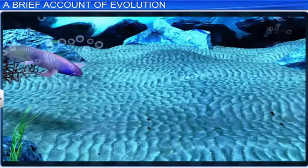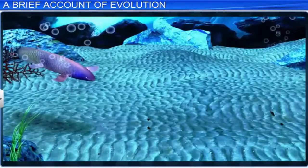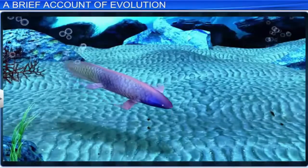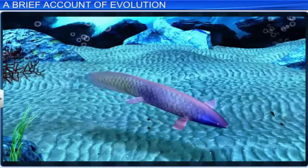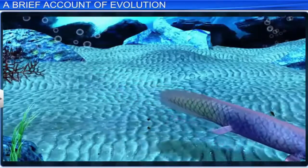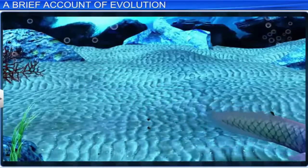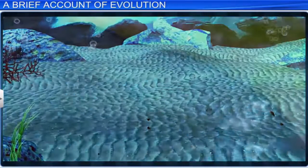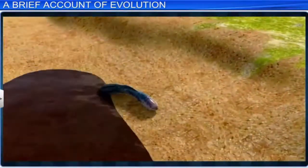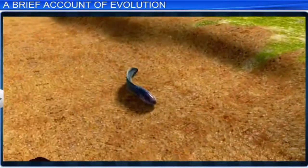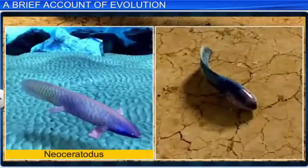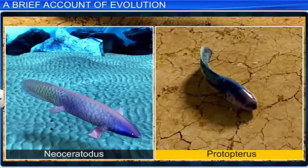Meanwhile, in the Carboniferous period, around 350 million years ago, there were also fish with stout and strong fins who could move equally well on land as well as in water. These were called Lungfish — for example, Neoceratodus and Protopterus.